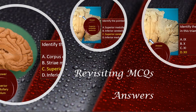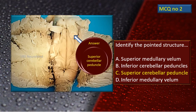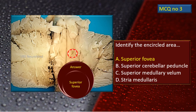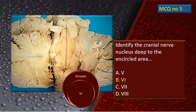Now, post-discussion, we revisit the MCQs. MCQ number 1: the flashing arrow points to the superior medullary velum — correct answer is C. MCQ number 2: the pointed structure is the superior cerebellar peduncle. MCQ number 3: the answer is the superior fovea. MCQ number 4: the correct answer is the hypoglossal triangle and the hypoglossal nucleus — answer is D. For the last MCQ, while it may be compelling to consider C, the actual answer is B — namely, the cranial nerve 6, abducent nerve nucleus.